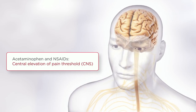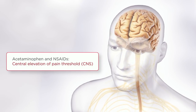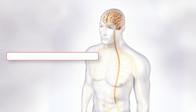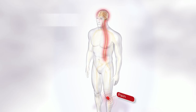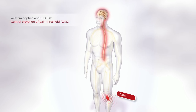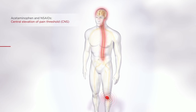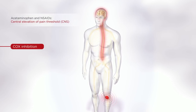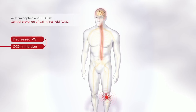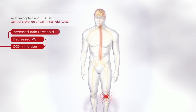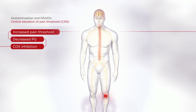In the central nervous system, both acetaminophen and non-steroidal anti-inflammatory drugs, or NSAIDs, are thought to provide analgesia through inhibition of cyclooxygenase and the consequent reduction in prostaglandin synthesis, thereby elevating the pain threshold.